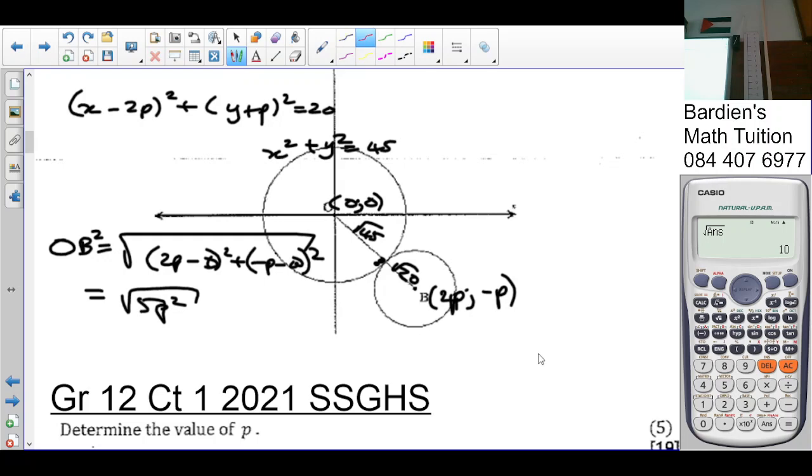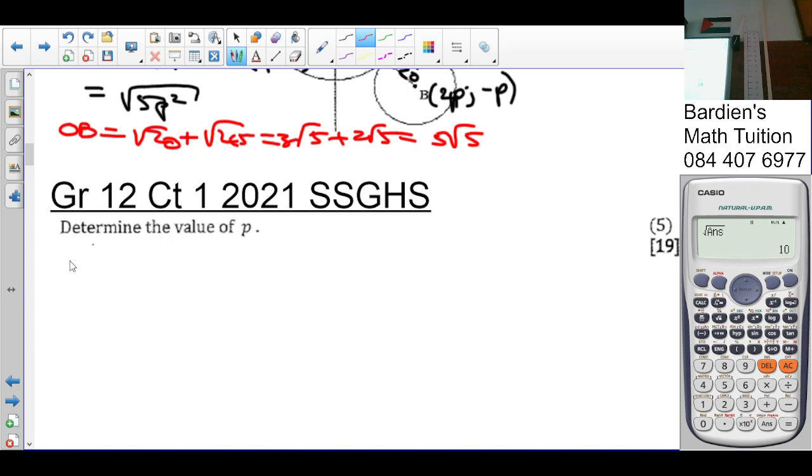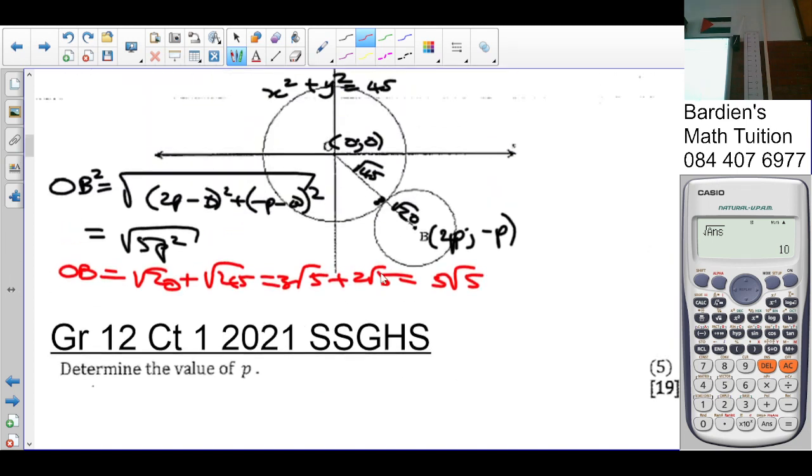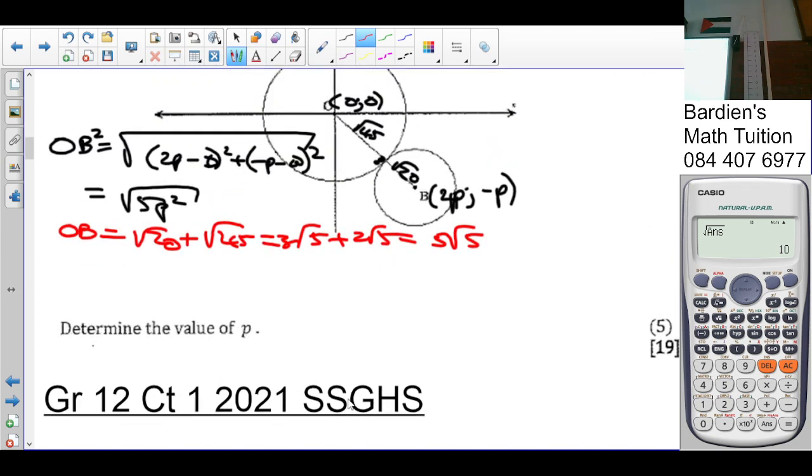But we also worked out that OB is also equal to the square root of 45 plus the square root of 20. So the square root of 45 is 3 root 5 plus 2 root 5, which is 5 root 5. So that is OB, and that is OB. So in other words, I can set the two equal to each other.